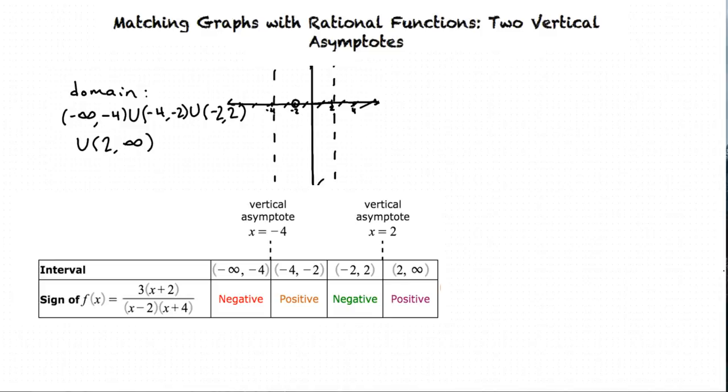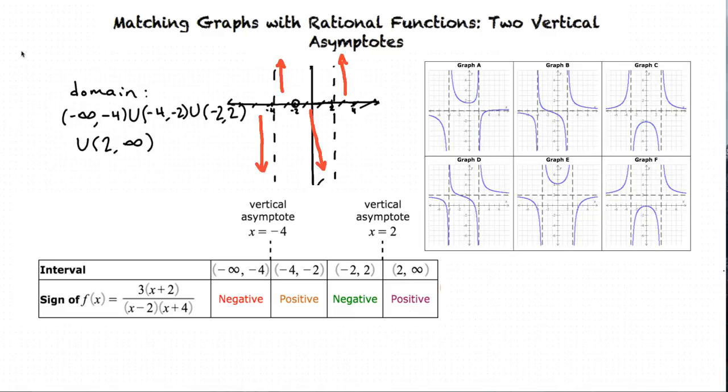We will then see that f is negative in the first interval, f is positive in the second interval, f is negative in the third interval, and f is positive in the fourth interval. Seeing the sign of the function in each interval, we can see that the correct graph must be graph B.